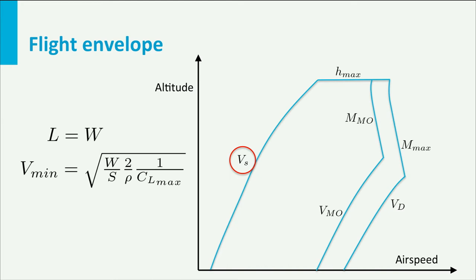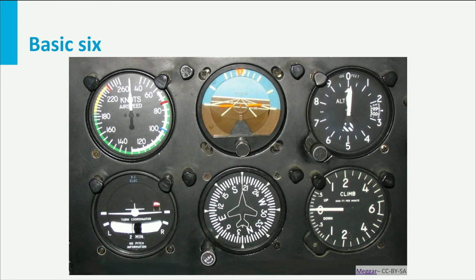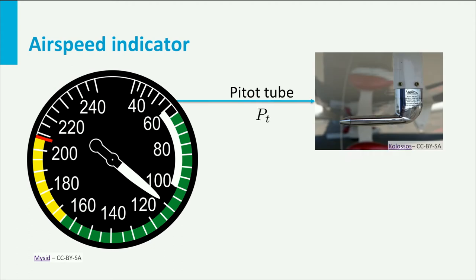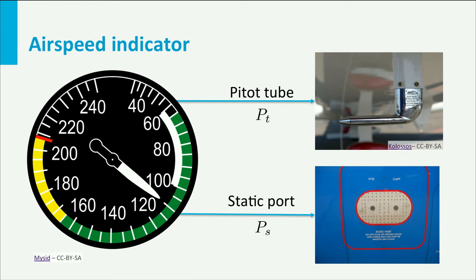In order to monitor the speed, the pilot has an airspeed indicator, which is part of the basic six instruments, always available in the cockpit. The airspeed indicator is a pneumatic instrument, which means it is connected to two inputs, a pitot tube and a static port. The pitot tube measures the total air pressure and the static port measures the static pressure.